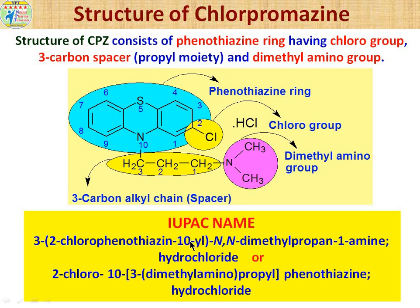For the first IUPAC name, the propyl moiety is chosen as the parent chain with numbering first, second, and third. The third carbon atom bears the phenothiazine ring with a chloro group at position 2, attached through its 10th position, giving the component name '2-chloro-10H-phenothiazin-10-yl'. Nitrogen has two methyl groups giving 'N,N-dimethyl', and the three-carbon chain gives 'propan-1-amine'. The hydrochloride salt adds 'hydrochloride' at the end.